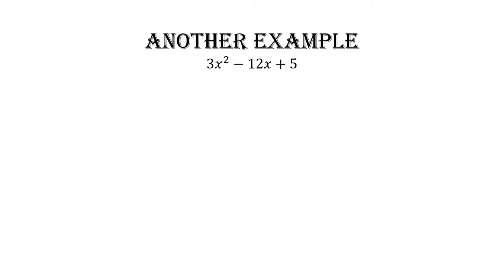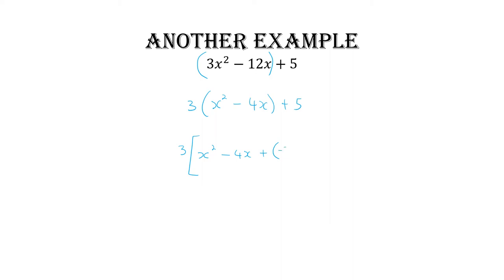Let's do another example. Following the procedure: first, I pair my x terms. Second, because a is not equal to one, I factor that out — I want to factor out the three. I don't care whether three goes into any other number; I just want x squared to have coefficient one. So I factor out three.